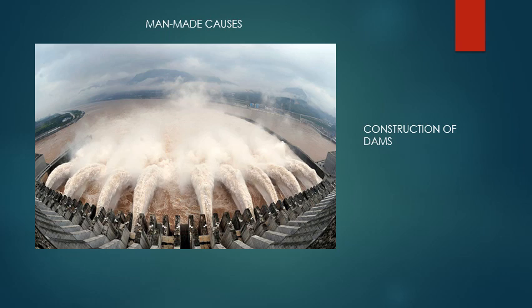Human beings are also responsible for disturbing the state of equilibrium or balance in the earth's crust. Whenever this state of balance is disturbed, the earth attempts to regain balance, causing earthquakes. The construction of dams, in which huge volumes of water are stored, results in earthquakes. Storing water in reservoirs destroys the crustal balance, which is responsible for earthquakes. For example, the Koyna earthquake in Satara district of Maharashtra in 1960 was the result of the Koyna dam constructed in 1957.